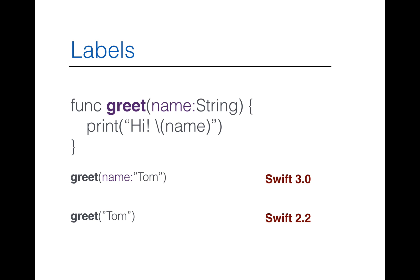Now we need to include the first parameter label when calling functions. Unless you want to omit it — in that case, you include an underscore right in front of the name of the first parameter. By including an underscore, you can omit the first parameter label whenever you call or invoke that function.